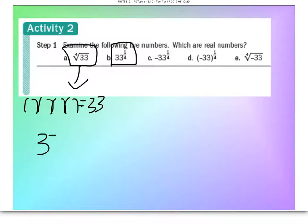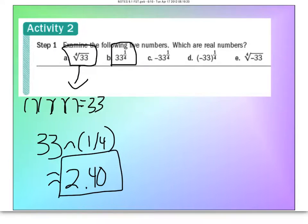So on the calculator, just type 33 to the carat of 1/4th. And when you do that, you're going to get approximately 2.40 for both A and B.